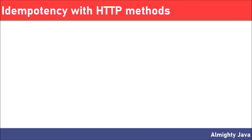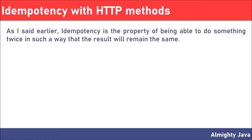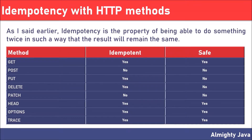Idempotency with HTTP methods — idempotency is the property of being able to do something twice in such a way that the result will remain the same. In this table, you can see we listed out all the HTTP methods with details about whether each method is idempotent or not, and safe or not. Let's go through them one by one.